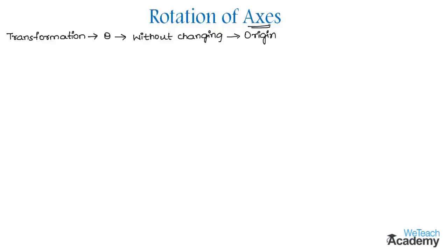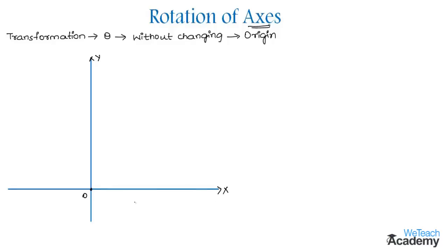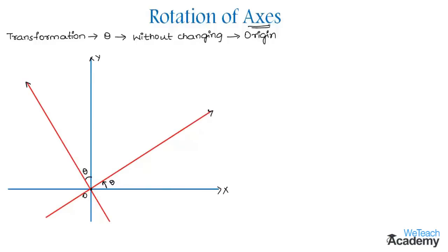Let me explain this using a rough diagram. We consider a coordinate plane with x and y axes — this is the original system x-o-y. Now let the axes be rotated through an angle theta in the positive direction about the origin to get the new system, say o-x-dash and o-y-dash.